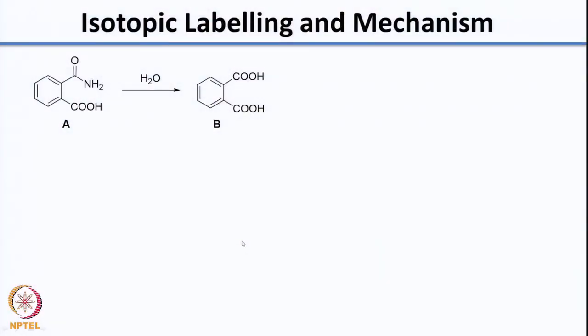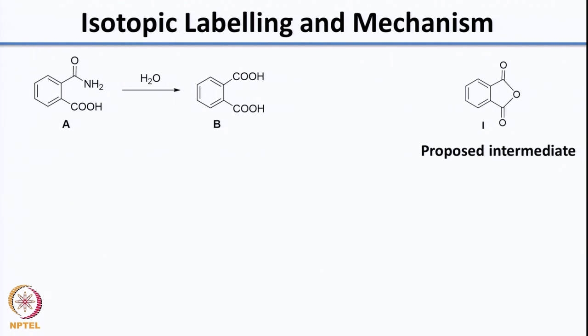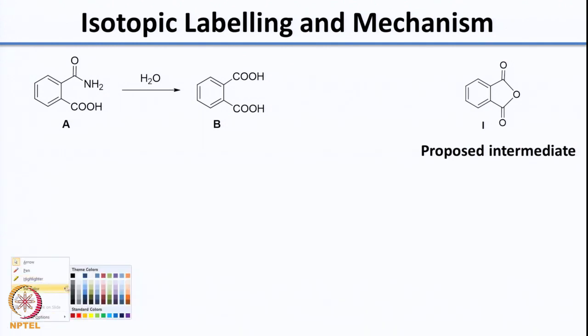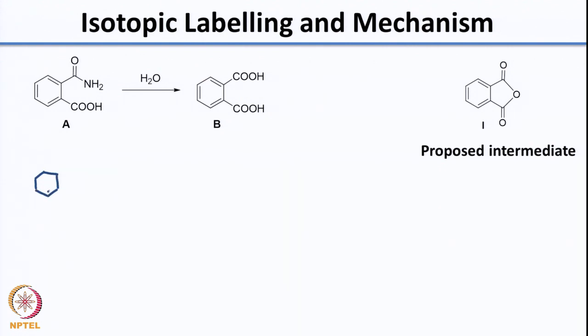Before we stopped the class I had asked you to think of the mechanism for this reaction. What is proposed is that it goes via an anhydride intermediate. If your mechanisms do not have the anhydride intermediate, I suggest you press pause and work out a mechanism where you get this anhydride intermediate. Another hint: the neighboring carboxylic acid has a role to play. I am going to write out the carboxylic acid group so it will be easier for you to follow.